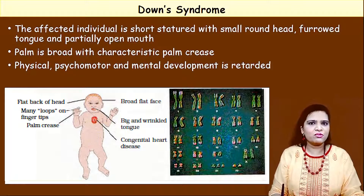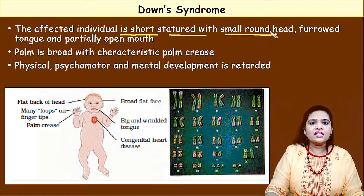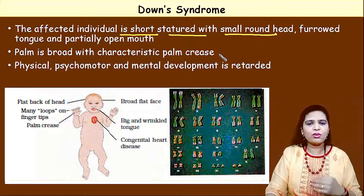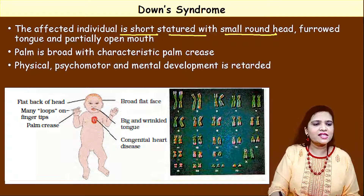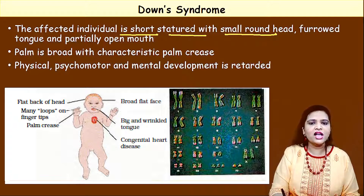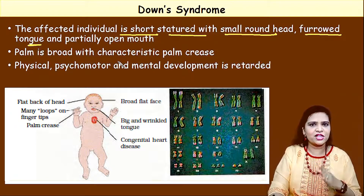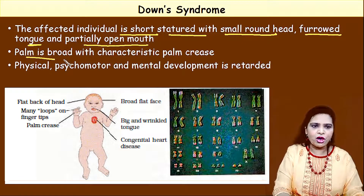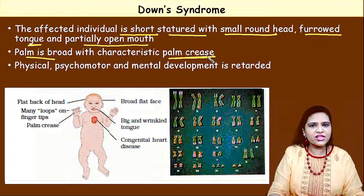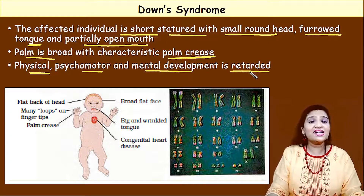So what happens to the Down syndrome child? The affected individual is short-statured with a small round head. They will be short in nature. The head is round and small, with a furrowed tongue — the tongue has a depression-like condition. The mouth is partially open always. The palm is broad with a palm crease. Physical, psychomotor, and mental development is retarded.